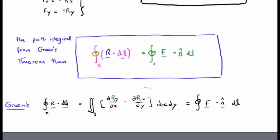Green's theorem then is written at the bottom of your screen. The closed line integral of r·dl is the double integral of del r sub y del x minus del r sub x del y dx dy, which is equal to the closed line integral of f dot n-hat dl.